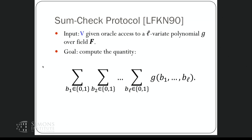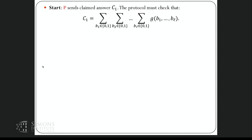The verifier can query the oracle for the evaluation of g at any input. What the verifier wants to compute is the sum of g's values at all 2^l Boolean inputs. That's the problem the sum-check protocol solves. It may not be obvious why this is useful, but it turns out to be very useful. The sum-check protocol can fit on roughly half a slide.